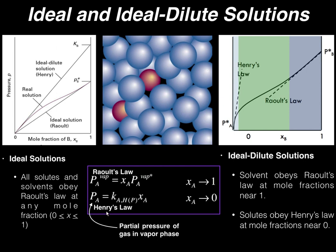Henry's Law is only applicable at very small mole fractions of whatever species you're talking about with respect to — in this case, it's ethanol. So if we had a mole fraction of like 0.05, we might have Henry's Law appropriate. If we start getting way above that, we can't use Henry's Law.